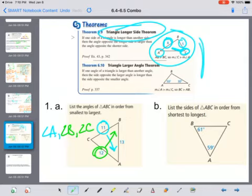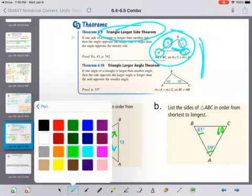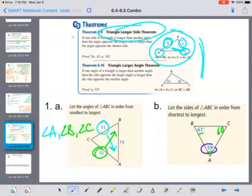In this next triangle, we are given the angles, and I can subtract 61 and 59 from 180 and get 60 degrees.